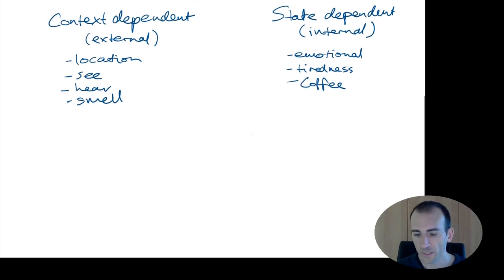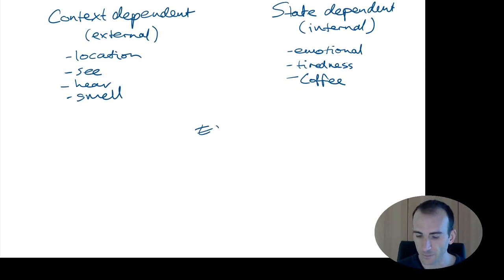So let's apply all this and think about exams. You're going to be studying for exams in the coming months and so one thing you could do to help yourself do better on your exam is to try to match the context and state dependent cues that you'll have in the exam room with when you're studying. So try and get the same conditions, same context and state dependent things matching when you're studying and when you're in the actual exam room.